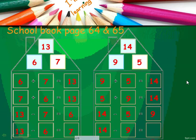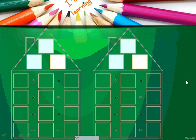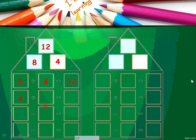Let's open page 65 in the book. We will choose number eight and number four. Eight plus four equals twelve. So eight, four, and twelve are a fact family because they form four facts: eight plus four equals twelve, four plus eight equals twelve, twelve minus eight equals four, and twelve minus four equals eight.